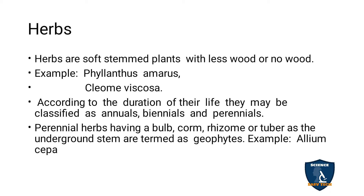The herb has green leaves and is a small plant — it won't grow beyond 10 centimetres. It is a soft-stemmed plant and there is no wood — that is, no secondary growth will occur in the herb. Examples: Phyllanthus amarus, Cleome viscosa. According to the duration of life, the herb is classified into annuals, biennials and perennials.